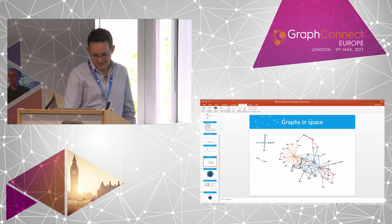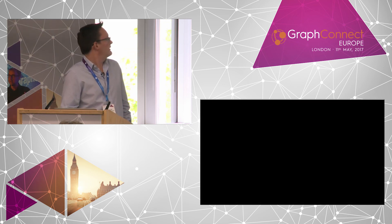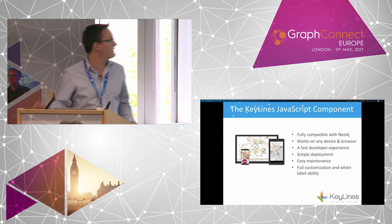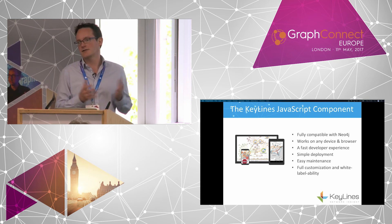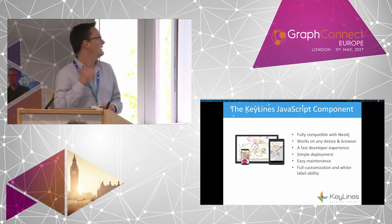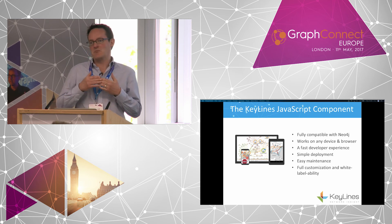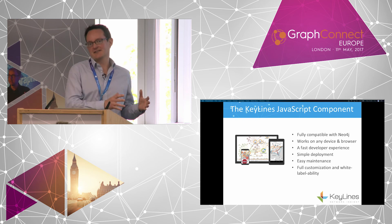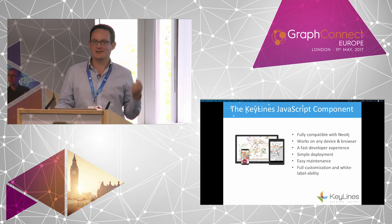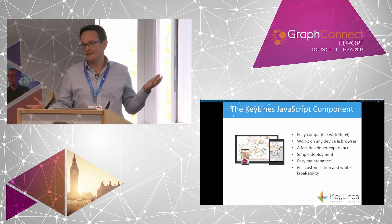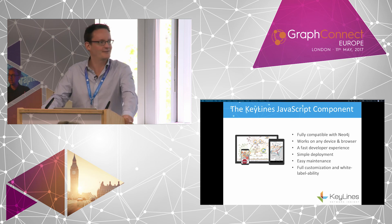Just to wrap up, those demos were all little web browser examples put together at KeyLines. KeyLines is a component for building visualizations in JavaScript, so you can put them into your web application. It works fully with Neo and it's designed to be very easy to get these kind of visualizations together — bridging the gap between the power of the data and the data science in your organization and actual end users: analysts, people who are just trying to extract information from graphs and gain insight. Happy to take questions.